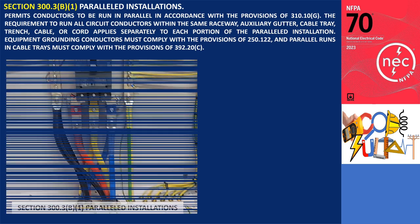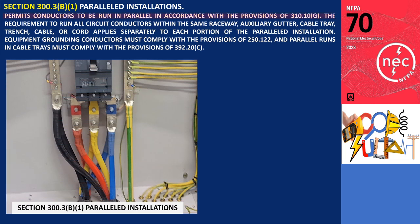Section 300.3b.1 permits conductors to be run in parallel in accordance with the provisions of 310.10g. The requirement to run all circuit conductors within the same raceway, auxiliary gutter, cable tray, trench, cable, or cord applies separately to each portion of the paralleled installation. Equipment grounding conductors must comply with the provisions of 250.122, and parallel runs in cable trays must comply with the provisions of 392.20.c.